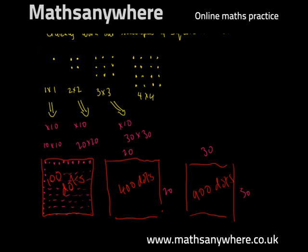And finally, we think about timesing our fourth square number, 16, or 4 by 4 by a factor of 10. We'd end up with a square number that looks something like this. 40 dots along one side, 40 dots along the other side. 4 times 4 is 16. Add on the two zeros, 1,600 dots.